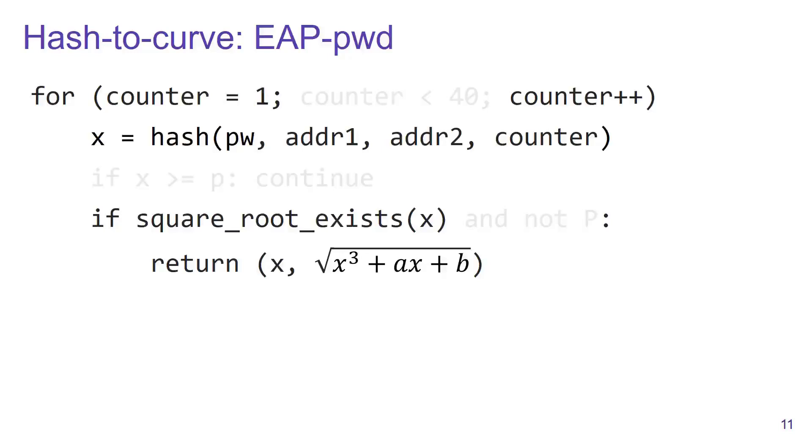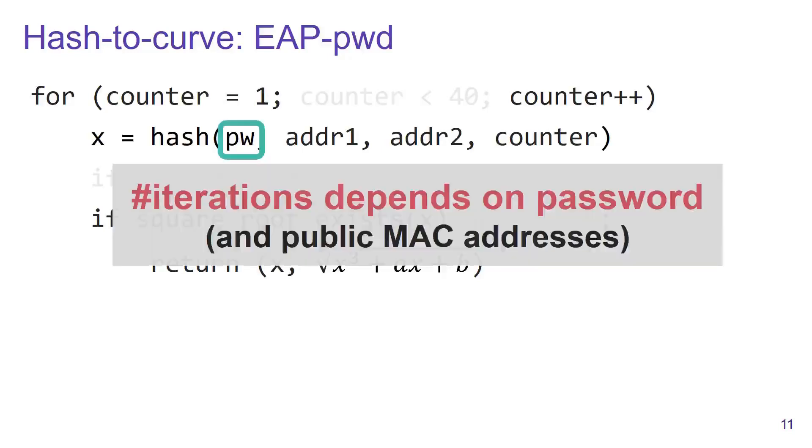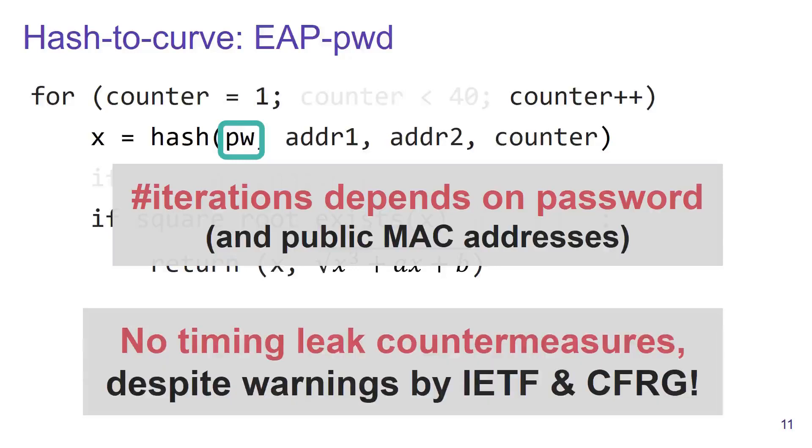Now some of you may already see the problem here. The number of executions performed by this algorithm now depend on the password and also on the public MAC addresses. Perhaps most surprising is that the IETF and the CFRG warned that this will create side channels in the algorithm.